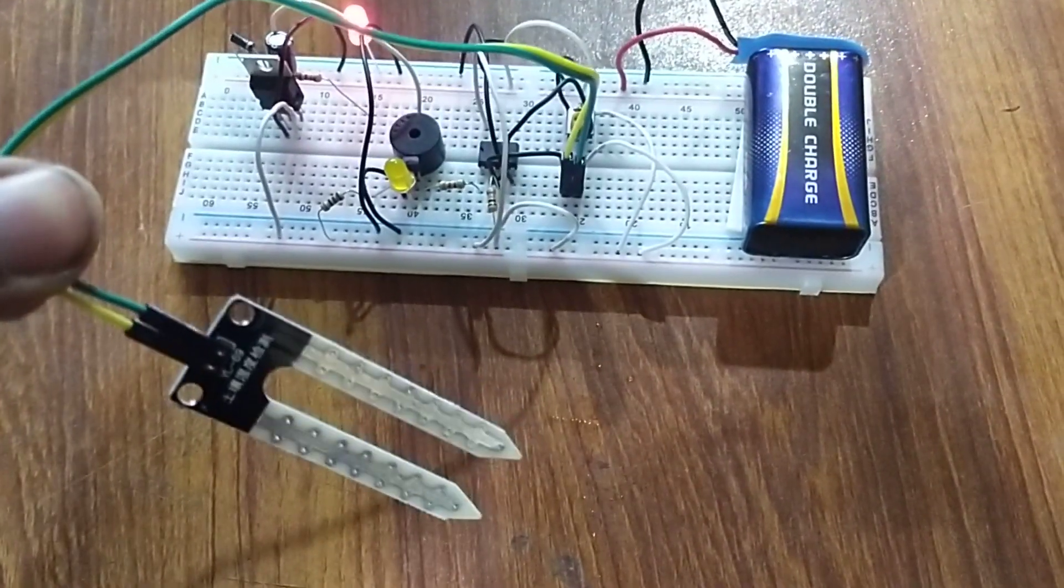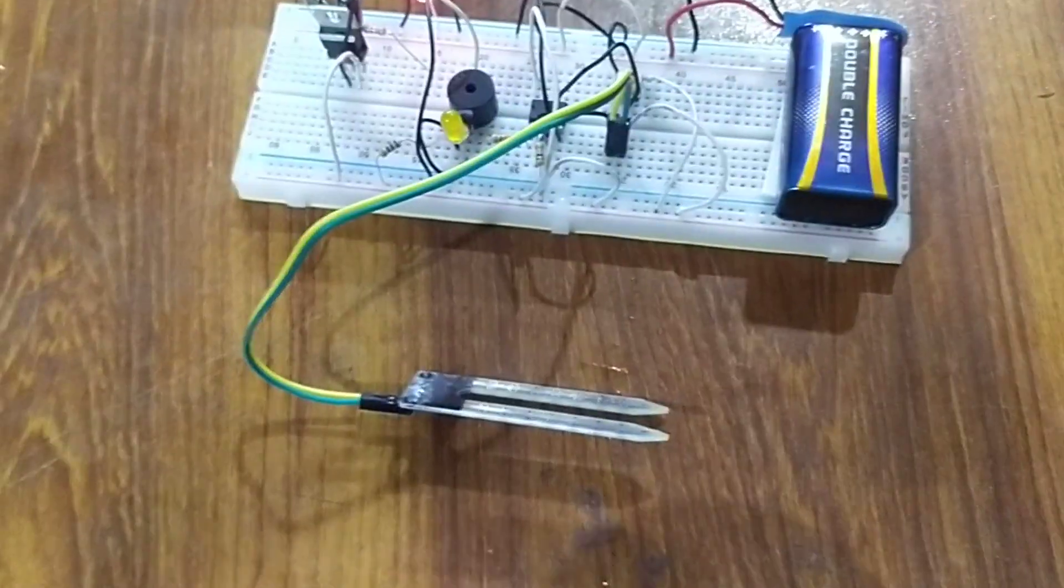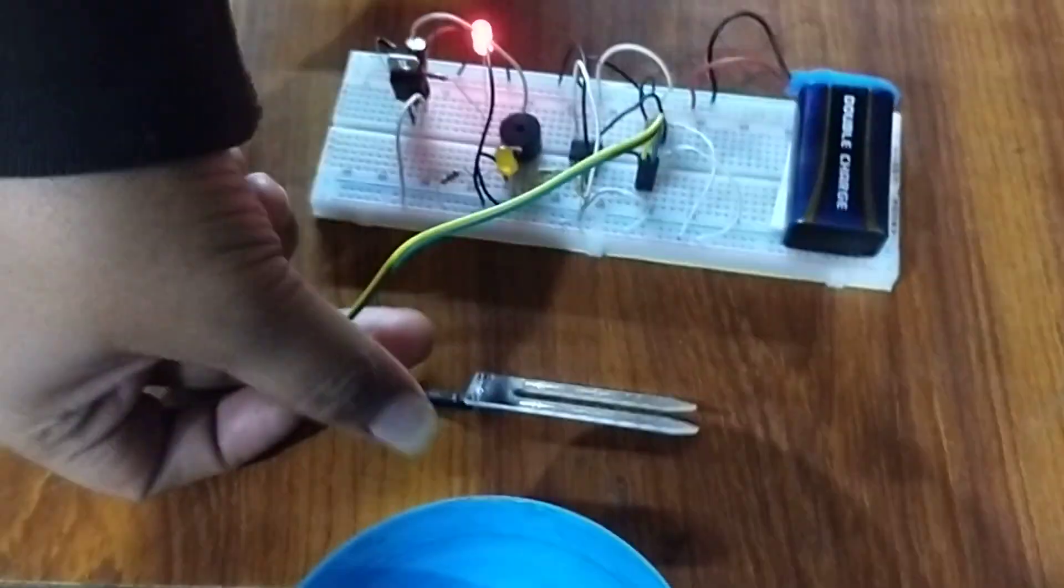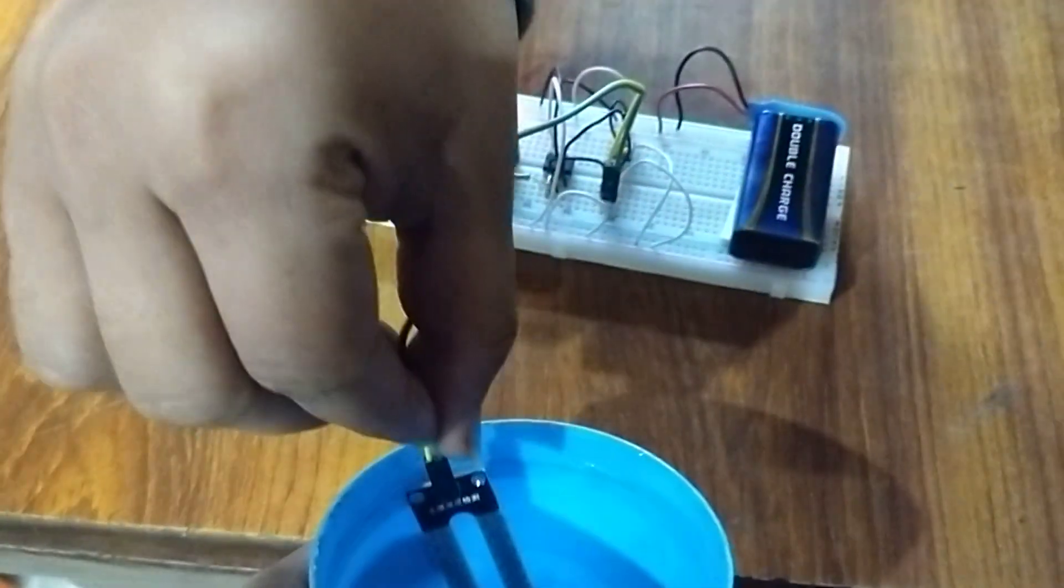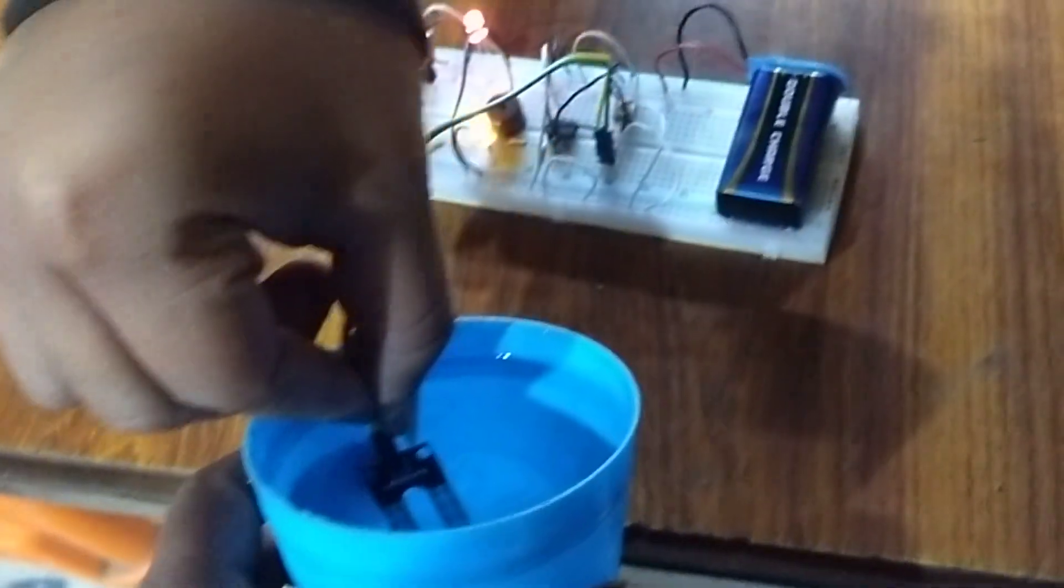At this time, our sensor is dry. Now we will dip the soil moisture sensor in water, and then it will sense the water.